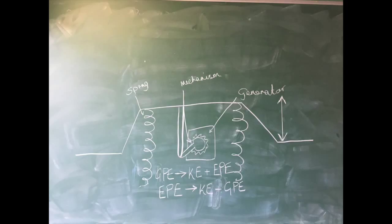As the car comes off the speed bump, the elastic potential energy within the springs converts to kinetic energy for the generator, as well as gravitational potential energy at the ramp as it returns to its starting position.